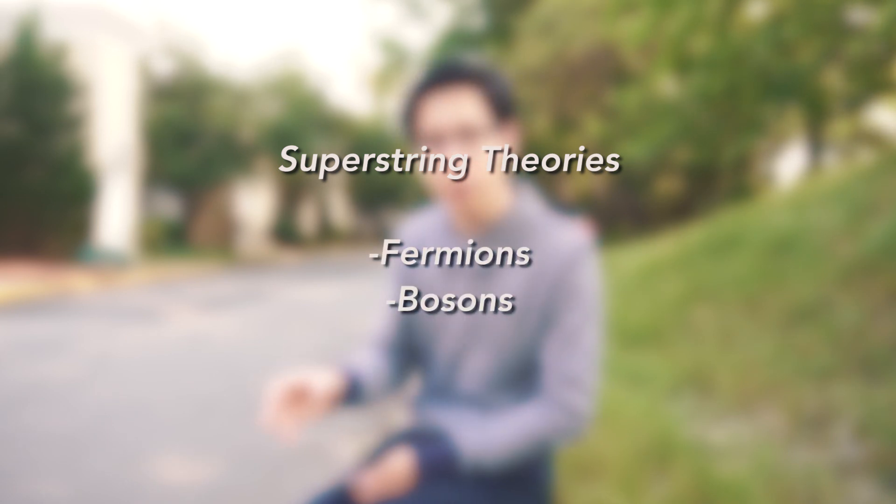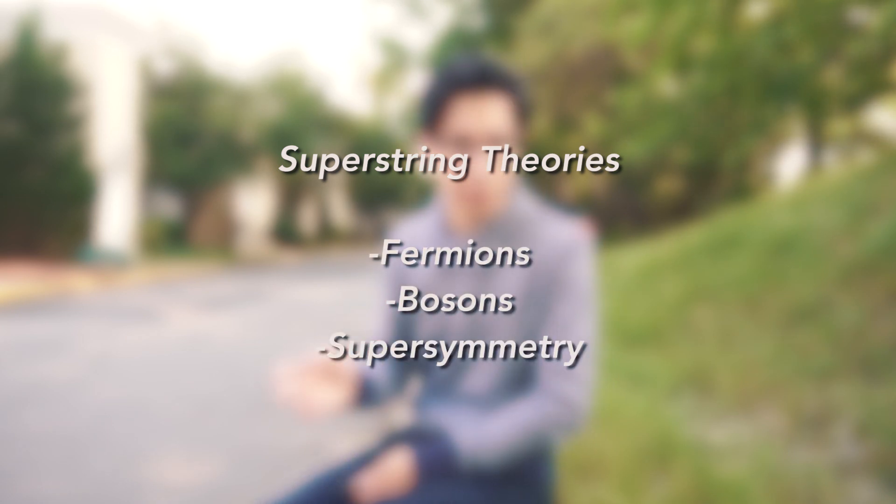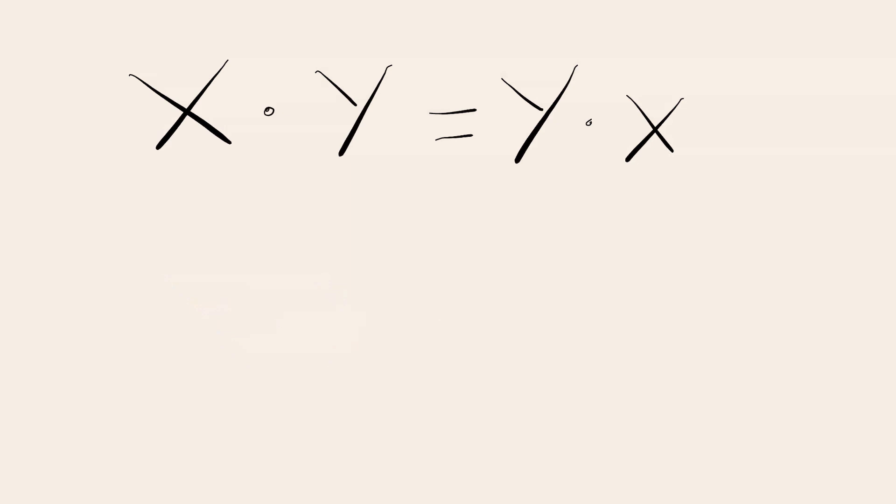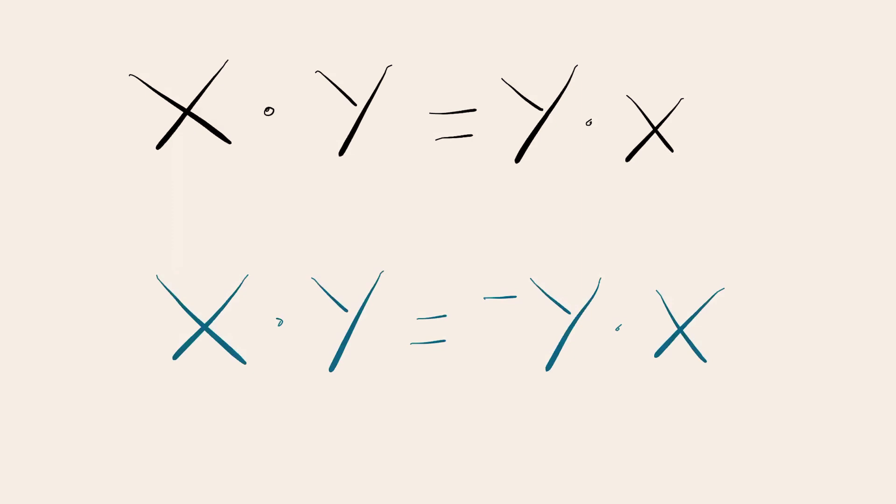The initial version of string theory was bosonic string theory; however, this only included bosons and left out fermions. Thus, theories called superstring theories prevailed, as they included both fermions and bosons and introduced supersymmetry. Supersymmetry is basically when each particle from one group has an associated particle in the other group, known as its superpartner, differing only by a half-integer spin value. Mathematically, supersymmetry involves unusual math: regular spacetime dimensions are denoted by ordinary numbers where x times y equals y times x, but supersymmetric directions anti-commute, so x times y equals negative y times x.